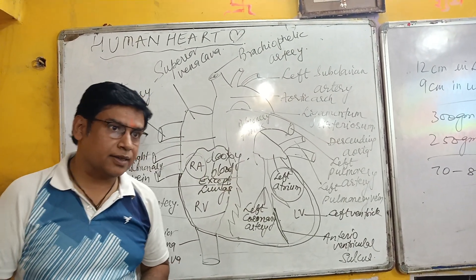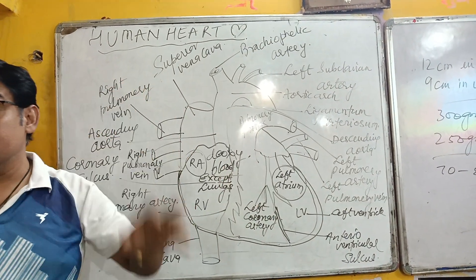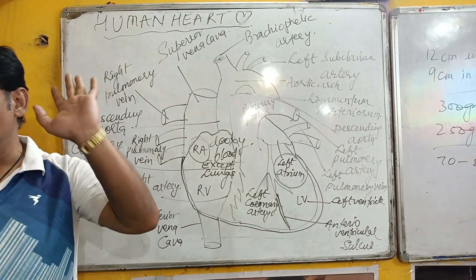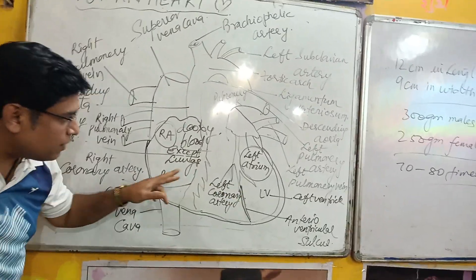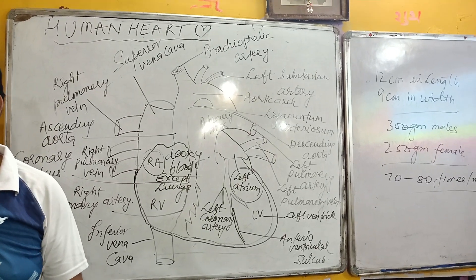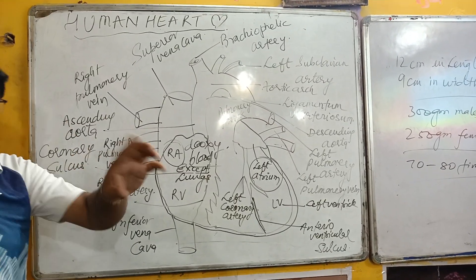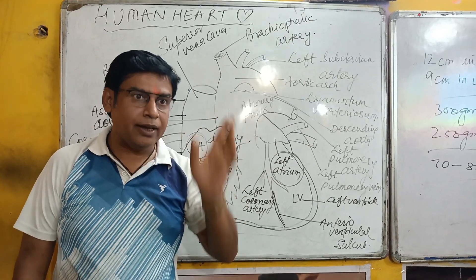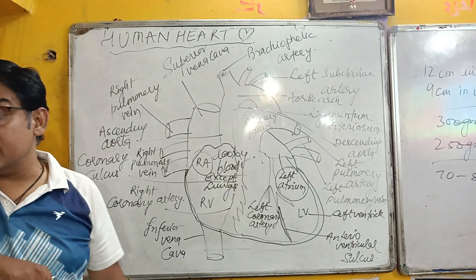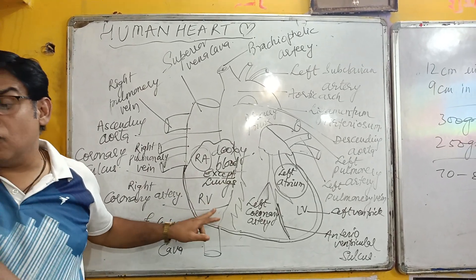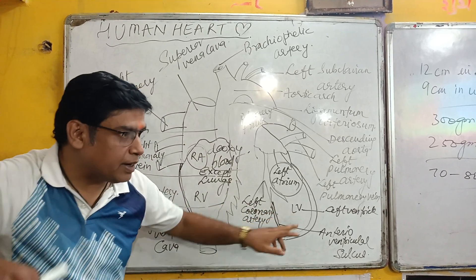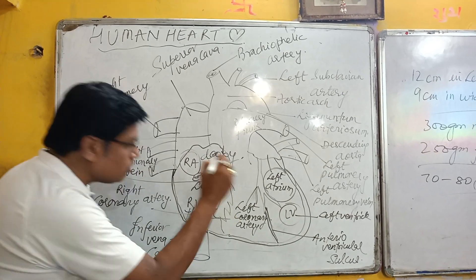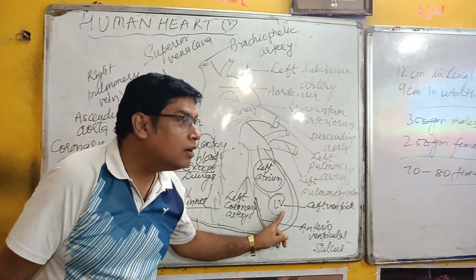Next, the ventricles form the lower part of the heart. We have a right ventricle and a left ventricle. The walls of the right ventricle are thinner as compared to the walls of the left ventricle.